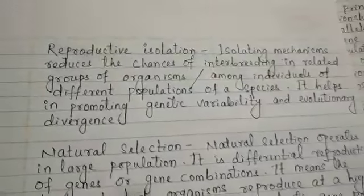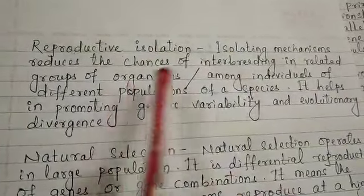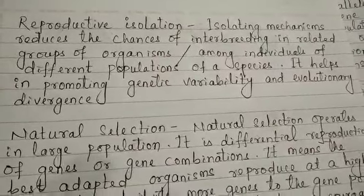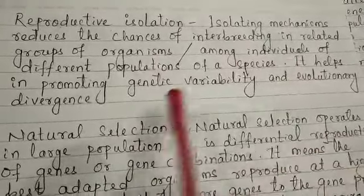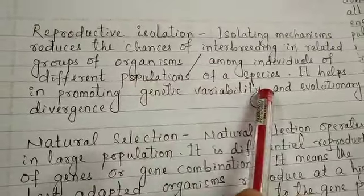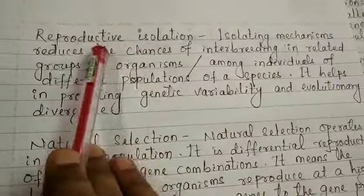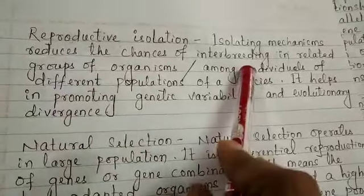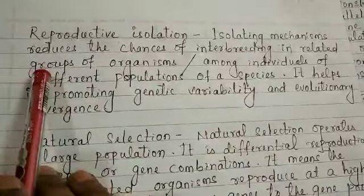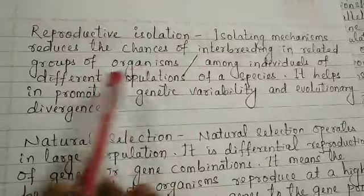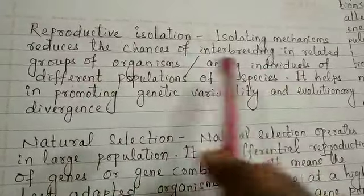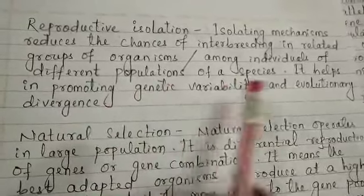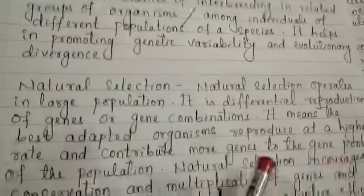Reproductive isolation: isolating mechanisms reduce the chance of interbreeding in related groups of organisms or among individuals of different populations of a species. Reproductive isolation restricts or stops the intermixing of individuals of different populations, and it helps in promoting genetic variability or evolutionary divergence.